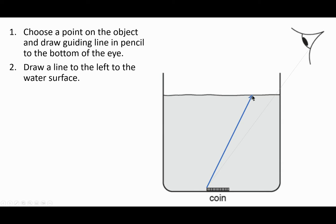That is the interface where the light is going to change speed. I now need to draw the normal, and the normal is always at 90 degrees to the surface change. Please always draw that in.